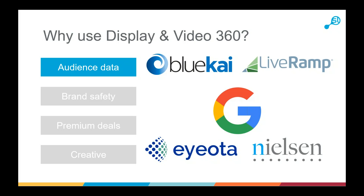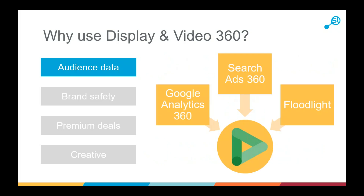Those third-party data partners sell their data through the platform and give an extra edge over what Google has alone. These companies are devoted almost entirely to data gathering and audience building, so some of the data they have is incredibly specific and useful. Alongside that, Google Analytics 360 and Search Ads 360 both can pass data through to DV360 — Analytics 360 through on-site behavior, and Search Ads 360 through PPC behavior such as keyword searches and ad engagement.